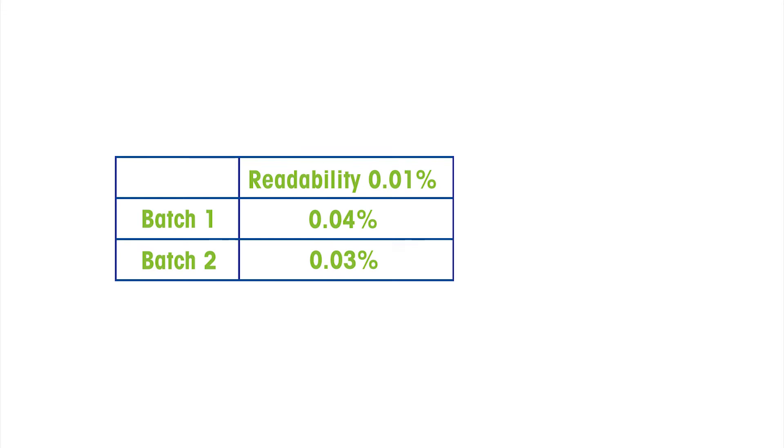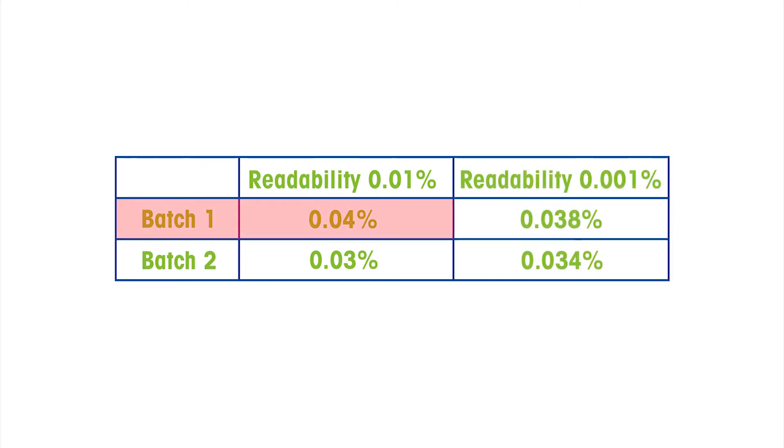In this example, a moisture content of 0.04 percent and above is out of specification. With 0.01 percent readability, the first batch would be discarded. With the higher readability, we see that both batches are within specification.